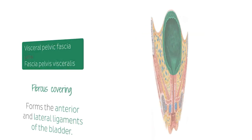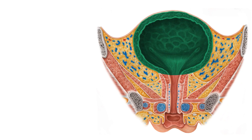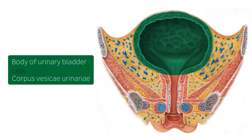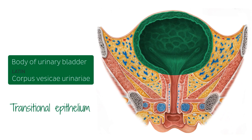Let's now talk about the actual bladder, starting off with the structure highlighted in green which is known as the body. The urinary bladder when empty has a pyramidal shape. It has a base known as the fundus, an apex, a superior surface, and two inferolateral surfaces. The body of the urinary bladder is lined with transitional epithelium, and it is a hollow pear-shaped part that holds the urine before it is voided. The body is located between the fundus and the apex of the urinary bladder.